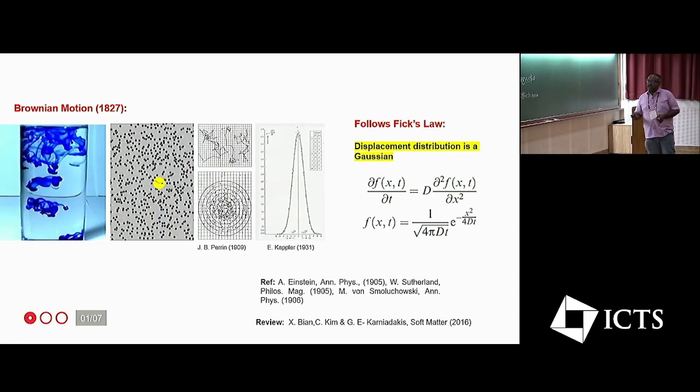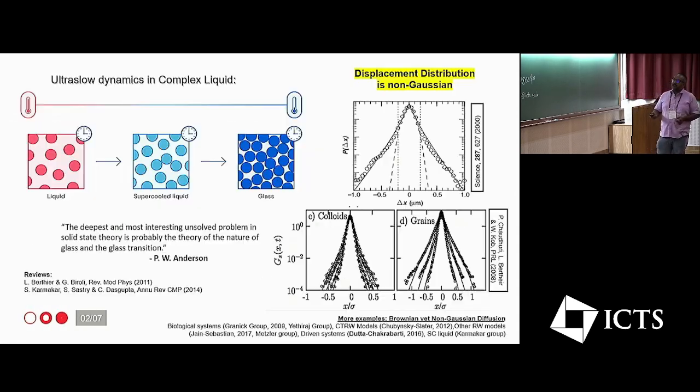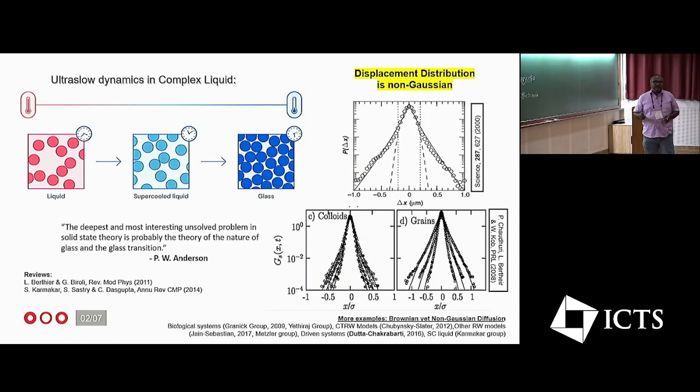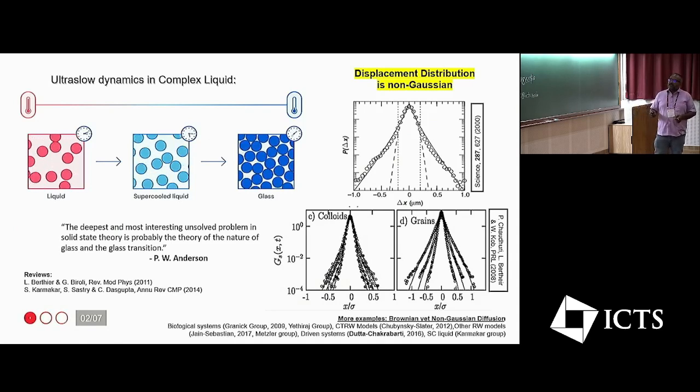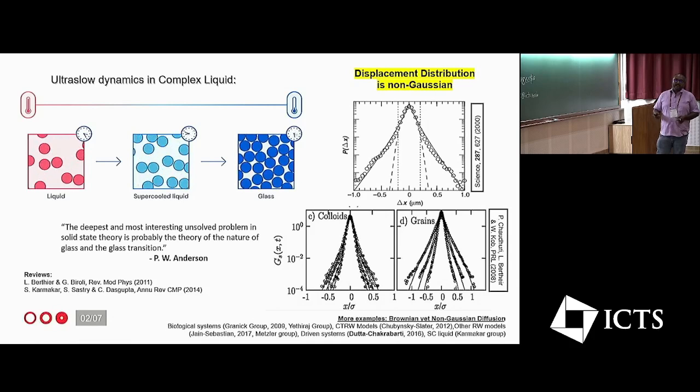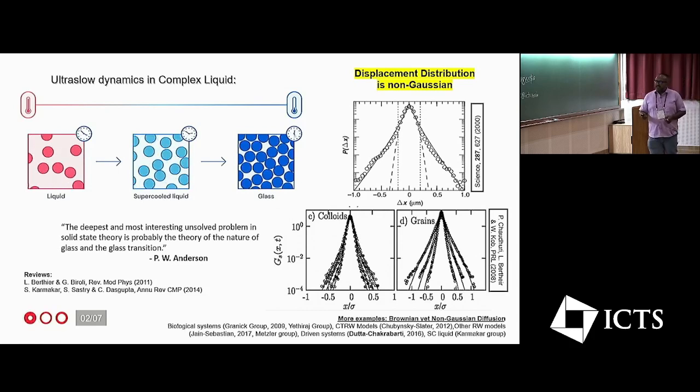But whether this is a universal story? Not really. For example, when liquid becomes cold and dense, liquid becomes supercooled and then it can approach the glass transition when things are very dense.